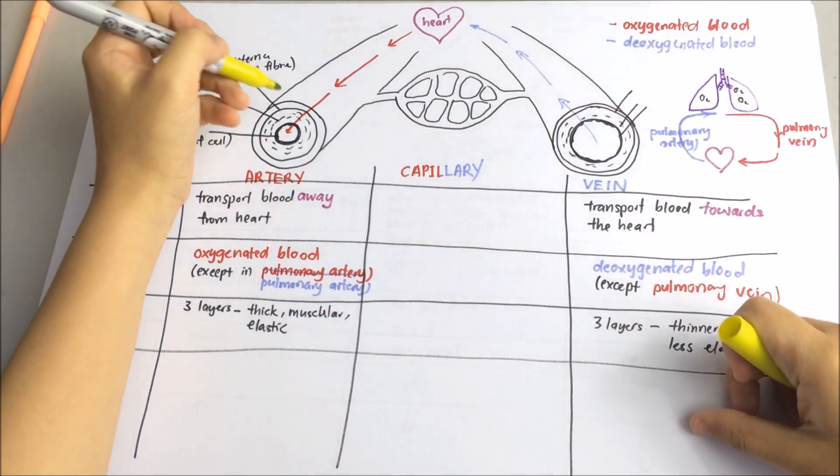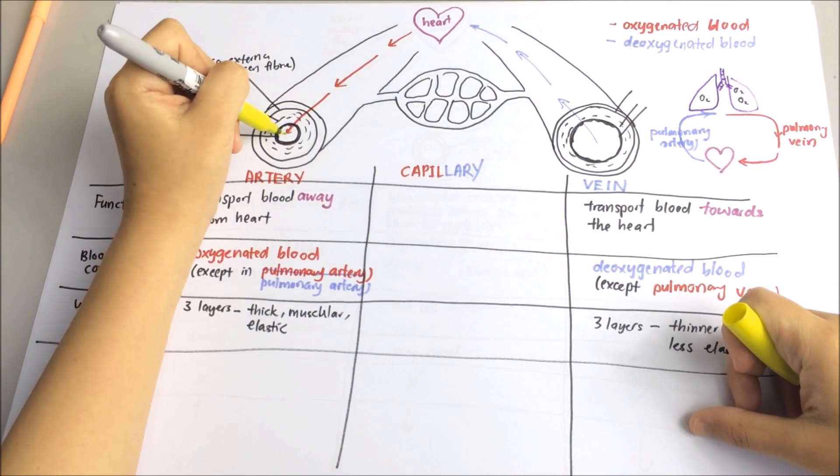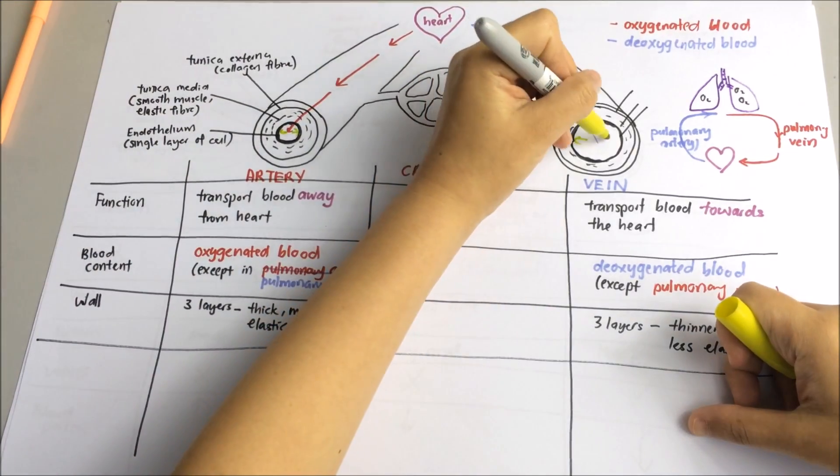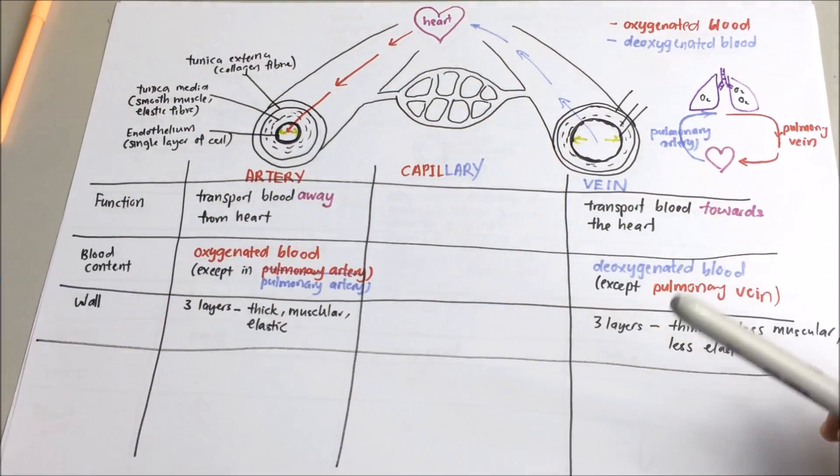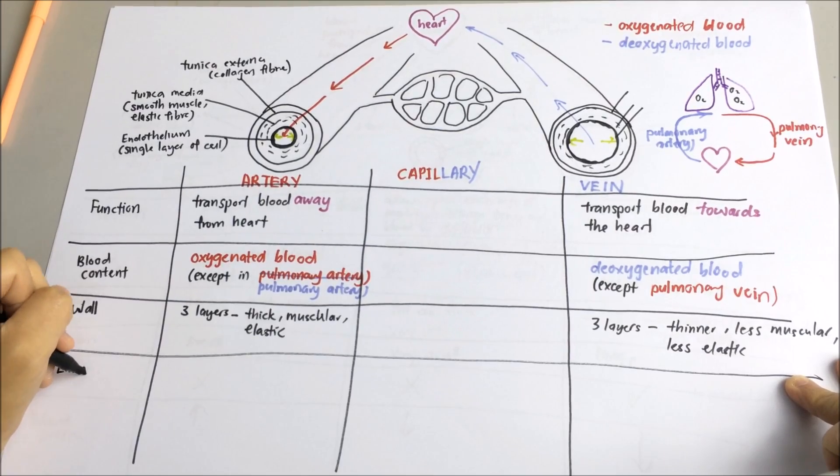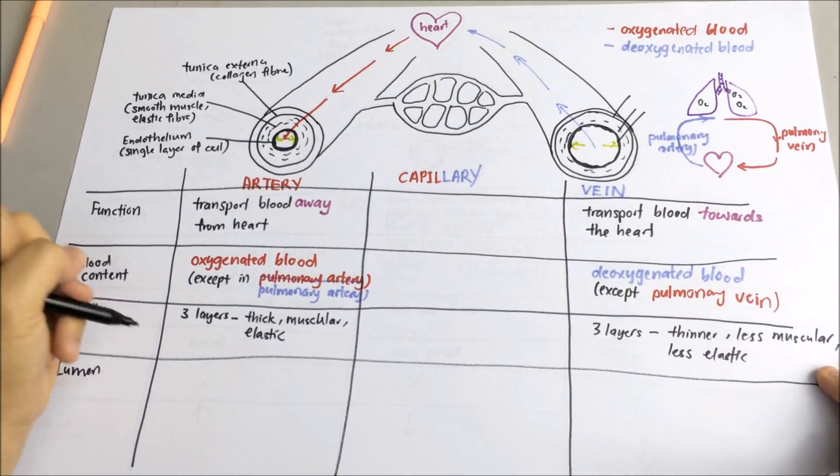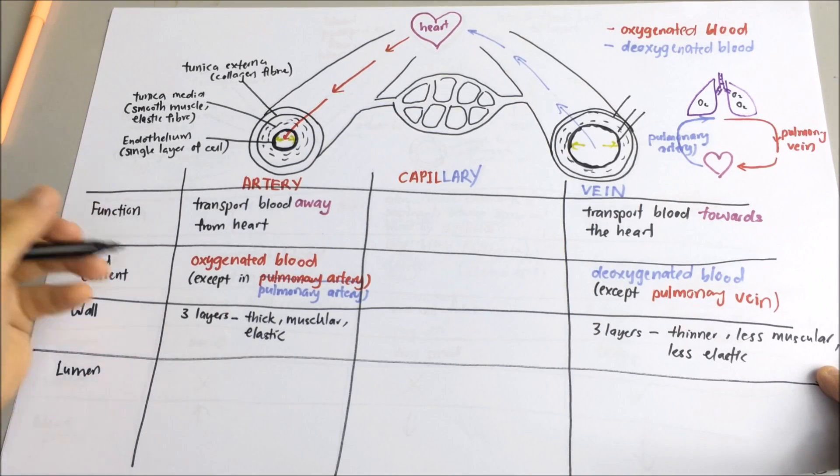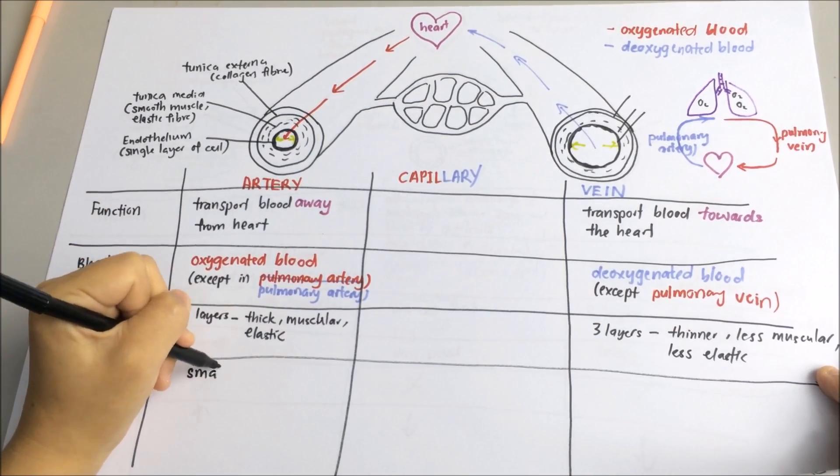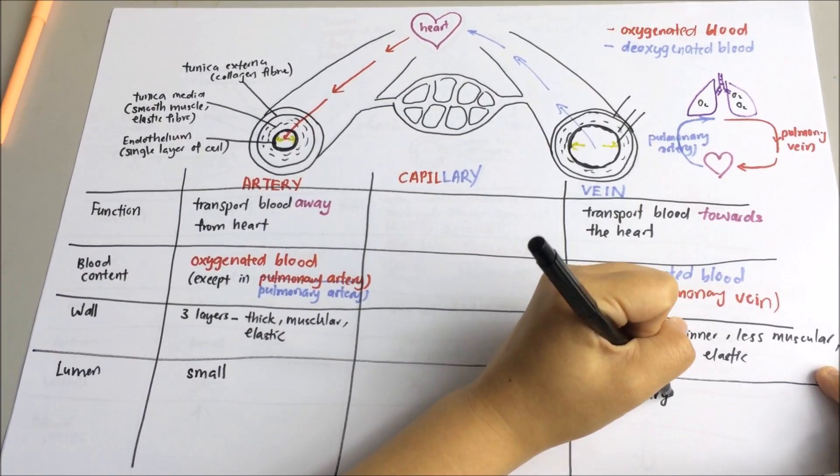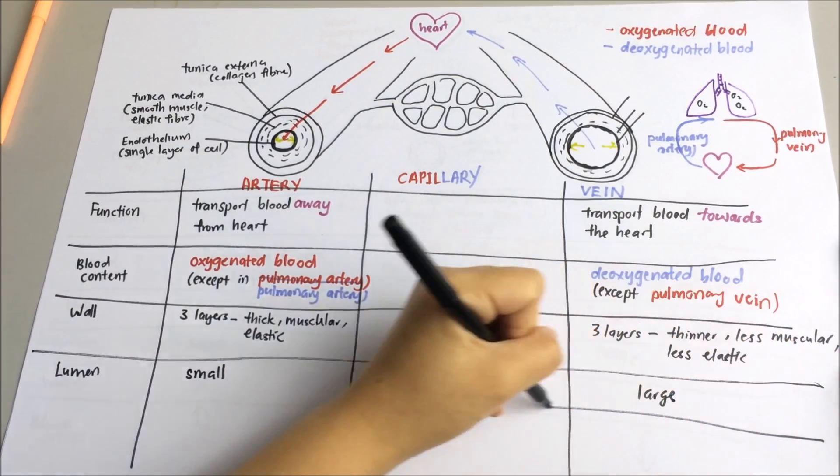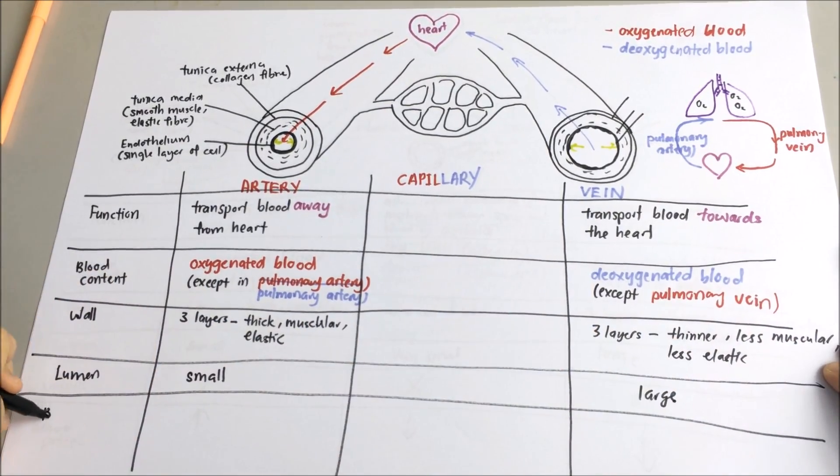Let's compare the size of lumen. Lumen is the inside space of the tubular structure. As you can see here, artery has a small lumen while the vein has much larger lumen.